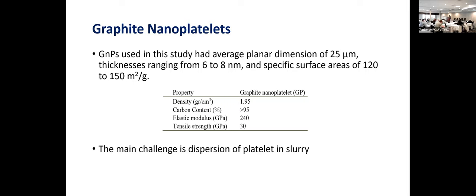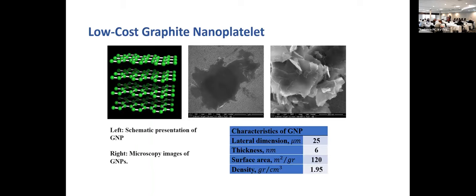The main issue with nano-additives — and even micro-additives — is dispersion. If you cannot disperse these materials effectively and they clump together, you cannot see significant improvement by adding more to the cement slurry. That is really the key to taking advantage of this technology. This is the SEM picture of the graphite nanoplatelets at 25 microns that we use in this study. We also tested other sizes but I'll present just this specific size to avoid confusion.